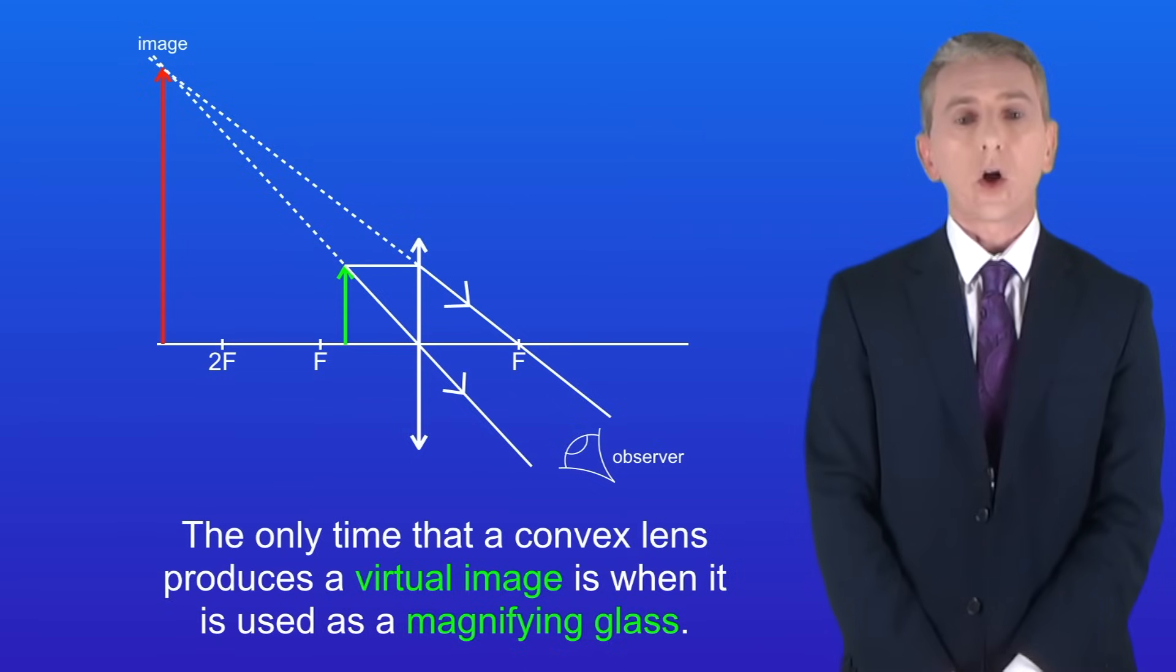You need to remember that the only time that a convex lens produces a virtual image is when it's used as a magnifying glass like this.